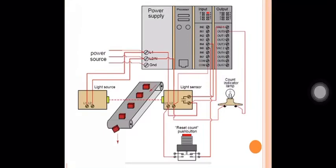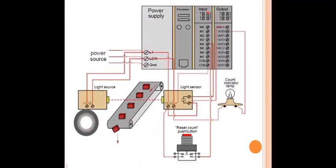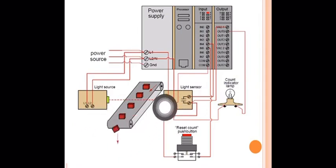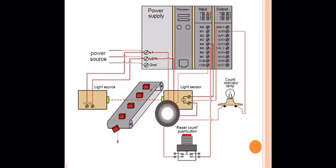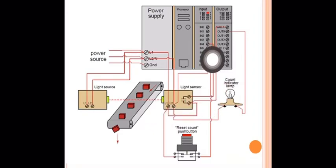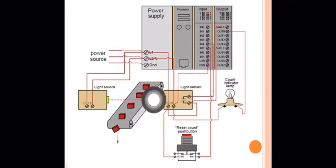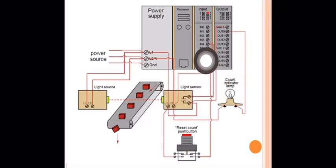Here is a simple example. We have a PLC with a light source and a light sensor. The light source continuously emits light. When a product passes on the conveyor, it breaks the light beam between the light source and the sensor. Each time the beam is broken, the PLC detects it and increments the count by one.